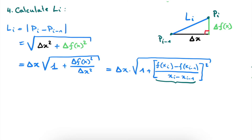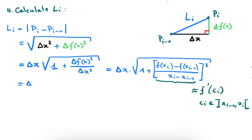At this point, you should recognize this expression. We have two consecutive points on the x-axis, xi and xi minus 1, and that means this expression approximates the derivative of the function at any point between xi and xi minus 1. So this becomes approximately the derivative of the function at ci, where ci is between xi minus 1 and xi. Therefore, the length li can be written as delta x multiplied by the square root of 1 plus the derivative of f squared — and we omit writing ci, since it simply drops when we take the continuum limit.